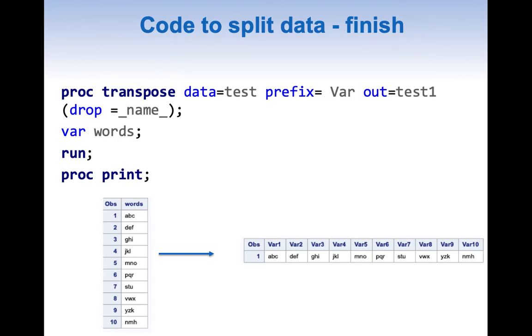The next step is simply to transpose the data. We have results like this and want to transpose. This is simple: proc transpose data equals dataset name, prefix equals var to convert everything as var1, var2 till var10, out equals the dataset we want. We're dropping the column underscore name underscore and mentioning the column to transpose in the var statement. This transposes the data from long to wide, creating 10 variables with equal length.